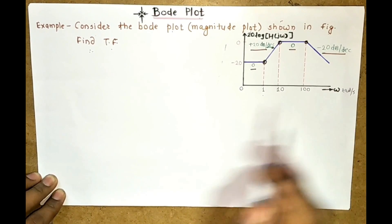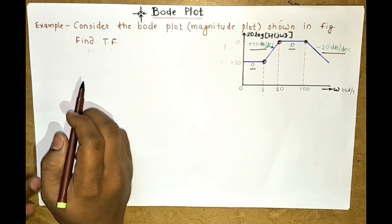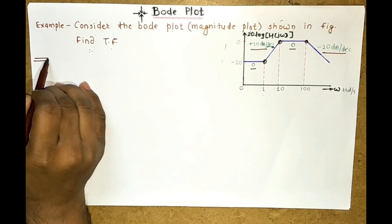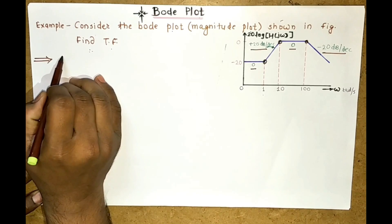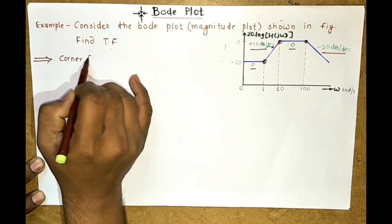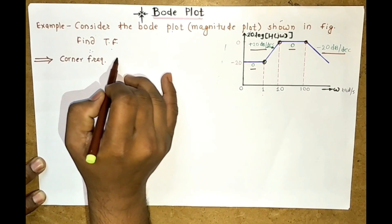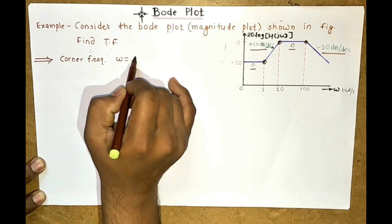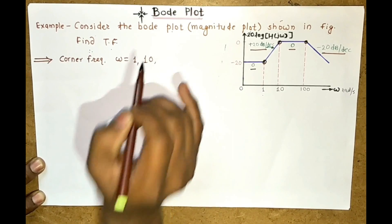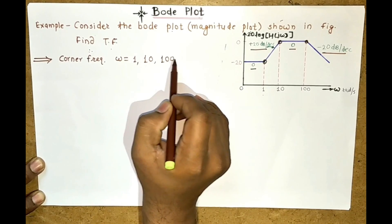When you get a numerical like this, first you have to observe how many corner frequencies are present and note them down. A corner frequency is where the slope is getting changed. So omega equals 1, omega equals 10, and omega equals 100 are the corner frequencies where the slope is changing.